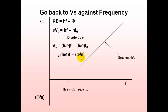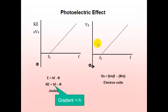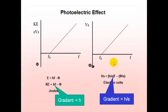To summarize both graphs: for kinetic energy against frequency, the equation is KE = hF minus the work function, kinetic energy is measured in joules, and the gradient equals h. For stopping voltage against frequency, the stopping voltage is kinetic energy divided by the electron charge — measured in electron volts — and the gradient is h/e, not h.